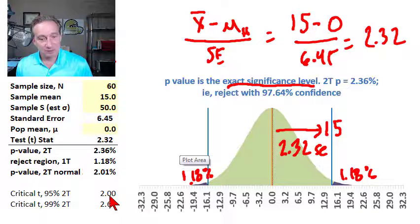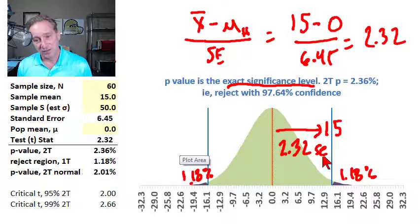So it's approximately normal, not quite normal. But this critical value of 2 being less than our test statistic means we would reject the null at 95%. Put another way, with 95% confidence,